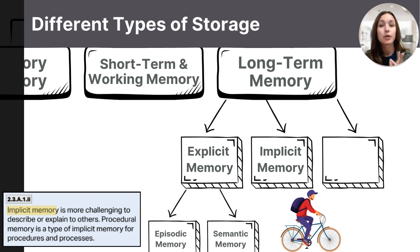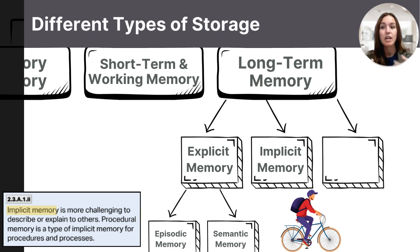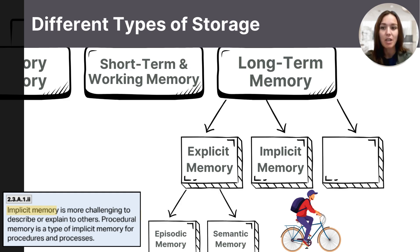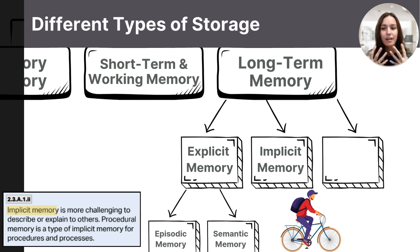As you may recall from the first video on encoding, some information slips into our long-term memory storage without us even being aware it's being encoded — we call this automatic processing. Once that information is retained and stored, we call it implicit memory: memories we're not consciously aware that we have, and we often draw upon them without even realizing it. You don't need to consciously think about or recall these memories — they are just brought upon when you need them, like knowing how to ride a bike or feeling anxious when you hear a loud siren.